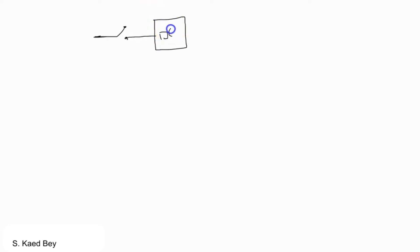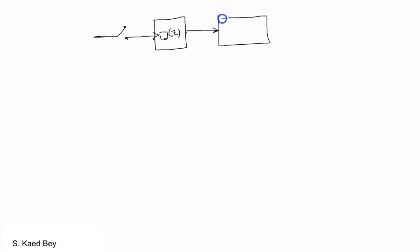Previously we obtained the closed-loop transfer function in the S or continuous time domain. However, if a computer is used as a digital controller, we expect to have some sort of a sampler before the digital controller. For the output of the controller to be fed to the S-domain transfer function, the data has to be reconstructed by a zero-order hold. The equivalent transfer function of a zero-order hold is 1 minus exponential of negative sampling time T, divided by S.